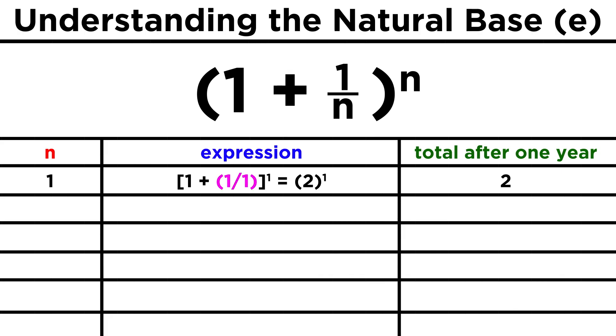If a bank were to pay 100% interest annually, we would make n equal to 1, and the expression would equal 2, so you'd get back twice what you put in.